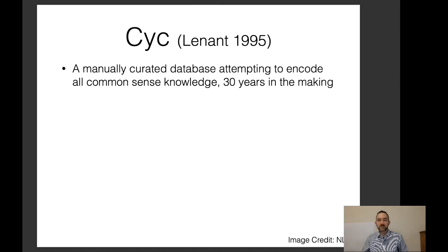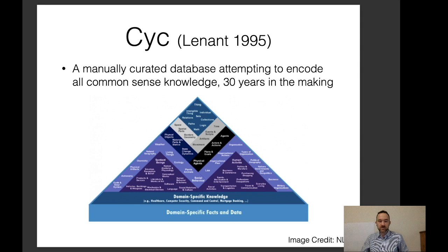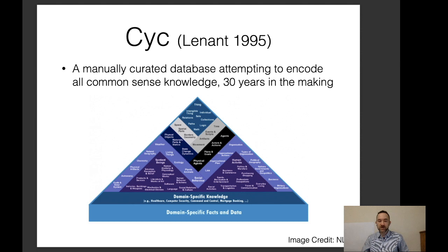Cyc is an example of a classical knowledge base built for traditional AI applications corresponding to reasoning. The attempt was to encode all common sense knowledge, and it was created manually over 30 years. It includes a hierarchy from "thing" at the top down through intangible things, individual sets, relations, collections, math, spatial knowledge, physical objects, weather, living things, and sentient beings, as well as domain-specific facts. This was a really ambitious project — perhaps overly ambitious — in that specifying all those types of knowledge manually is quite difficult.